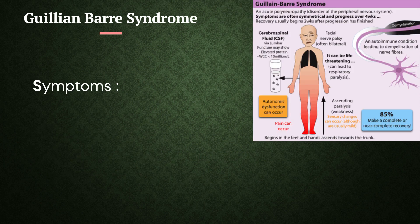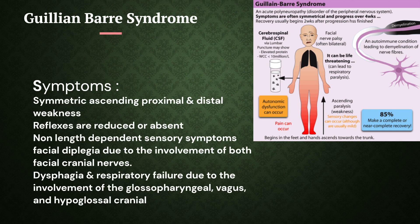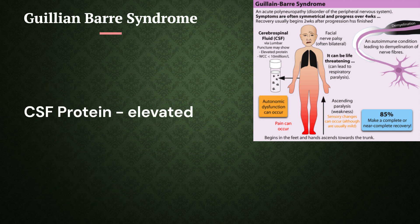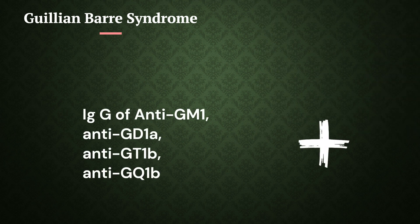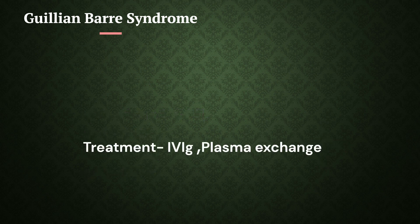The symptoms of GBS include symmetric ascending proximal and distal weakness, reduced or absent reflexes, non-length dependent sensory symptoms, facial diplegia due to involvement of both facial cranial nerves, dysphagia, and respiratory failure due to involvement of glossopharyngeal, vagus, and hypoglossal cranial nerves, and dysautonomia. CSF proteins are elevated. IgG anti-GM1, anti-GD1a, anti-GT1b, and anti-GQ1b are positive in the ganglioside panel. Treatment is IVIg and plasma exchange.